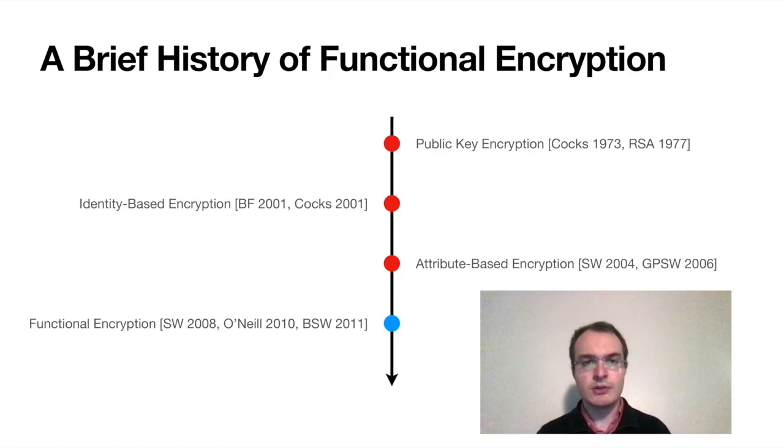The history of functional encryption, in a sense, goes all the way back to the invention of public key encryption. Public key encryption is one of the most basic forms of functional encryption. In 2001, we got identity-based encryption, which allows for some access control, and then in 2006, attribute-based encryption, which is stronger and allows for more complex forms of access control. And it's all culminated in 2011 with functional encryption, which is even stronger and allows for computations on the plaintext data.